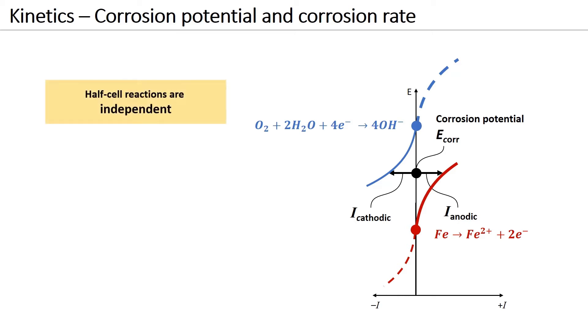It is important to stress that the two half-cell reactions, indicated by the blue and the red curves, are independent. When they interact, such as in this example of iron in a solution with oxygen, their individual shapes determine the reaction rate. Here, the anodic current at the corrosion potential is the corrosion current.